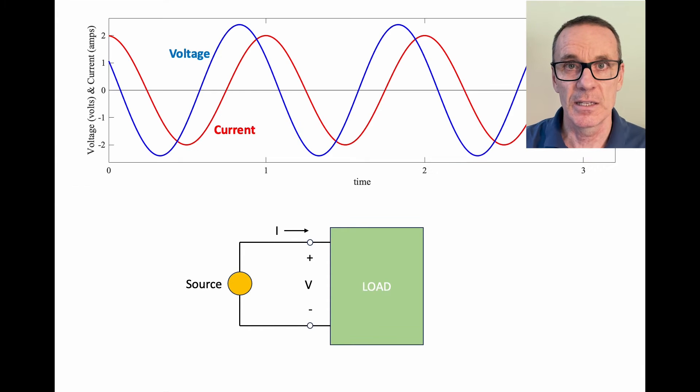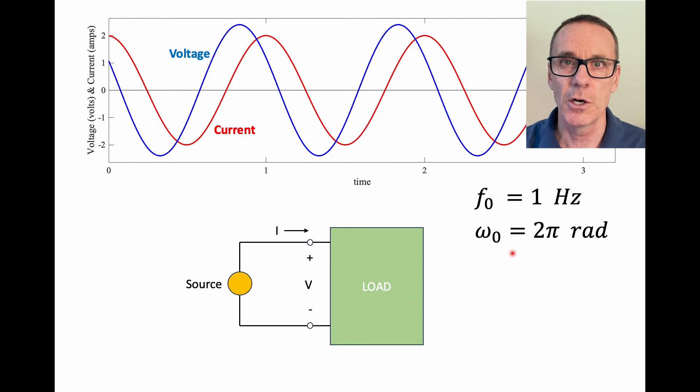So here's a couple of examples of waveforms of the voltage and current. And here I'm showing it for a frequency, an oscillating frequency of one hertz. Of course, in your house, it would be 60 hertz or 50 hertz, depending on the country that you're in. But I'm just going to show one hertz here for simplicity. That corresponds, of course, to an omega naught of two pi in radians.